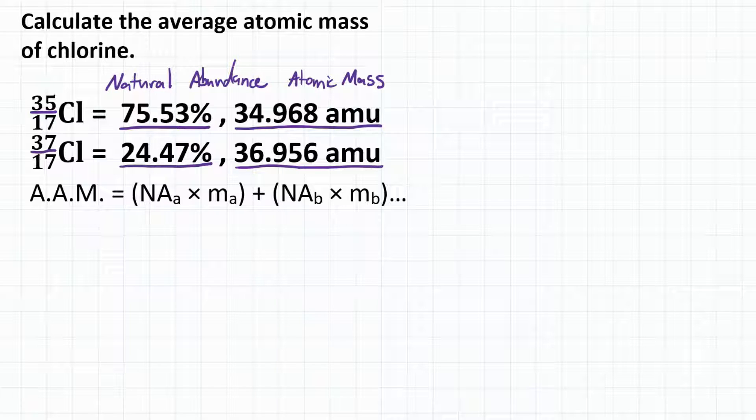So to calculate average atomic mass, we're going to take the natural abundance and multiply it by the atomic mass of each isotope, and then add those together.